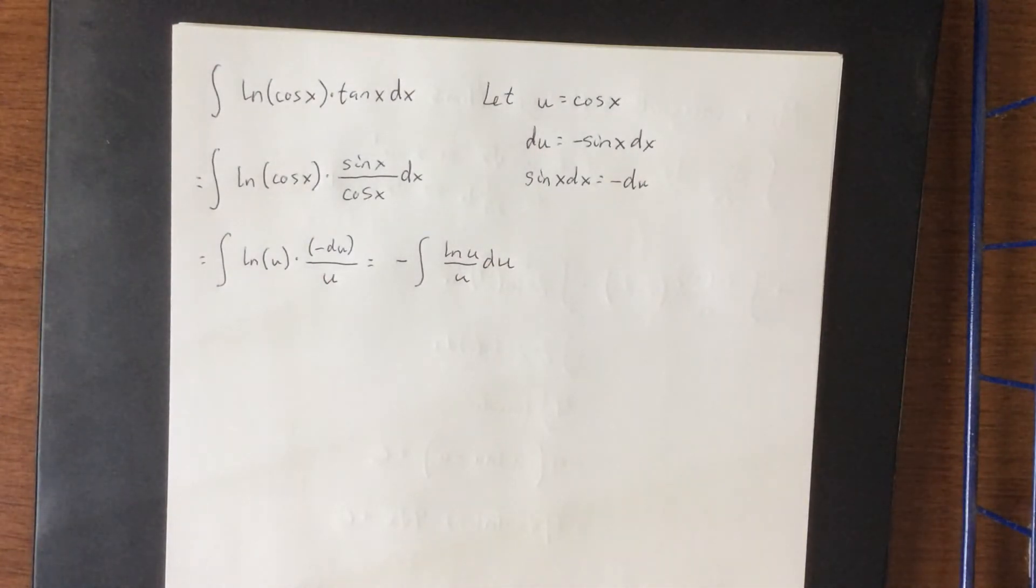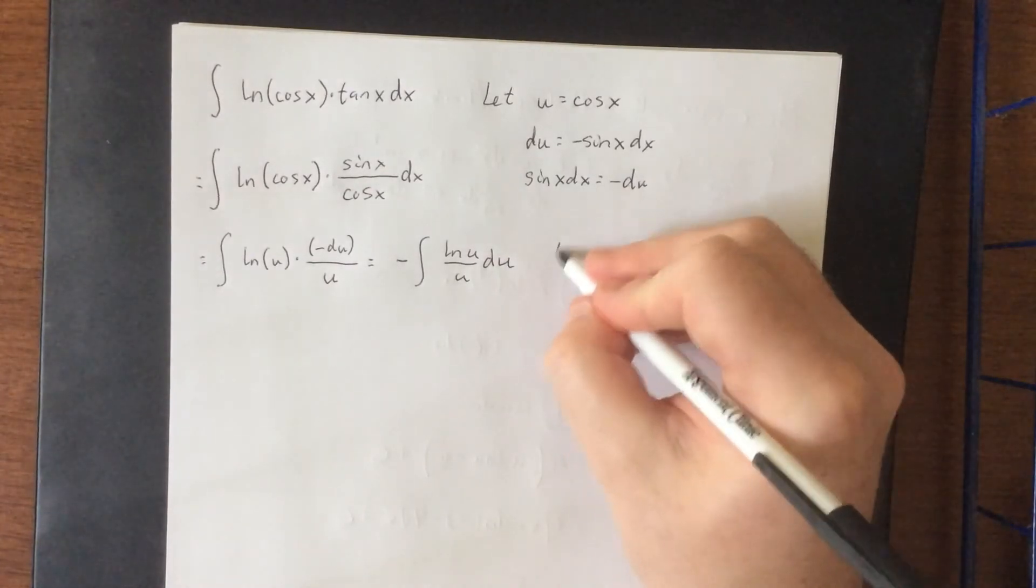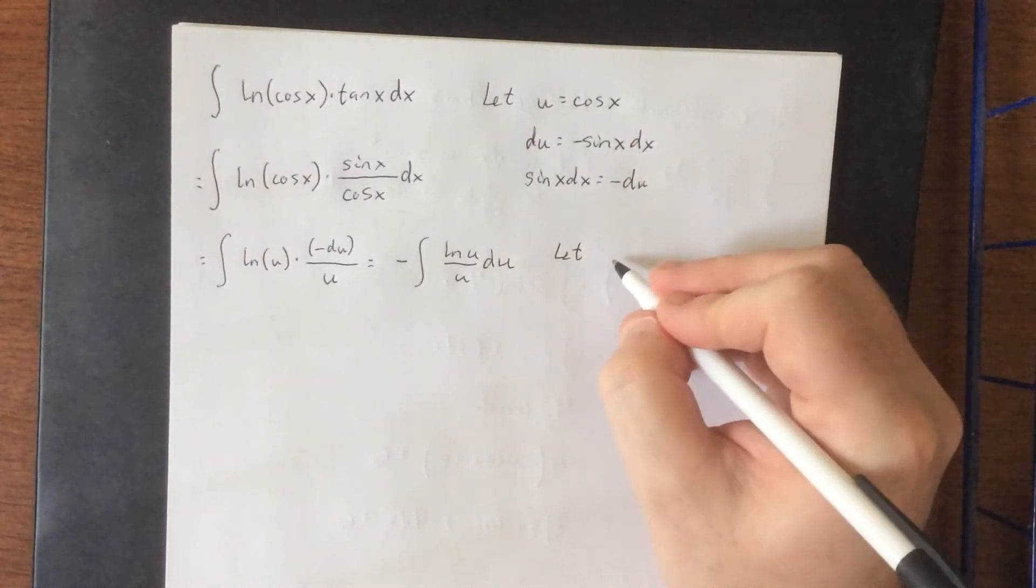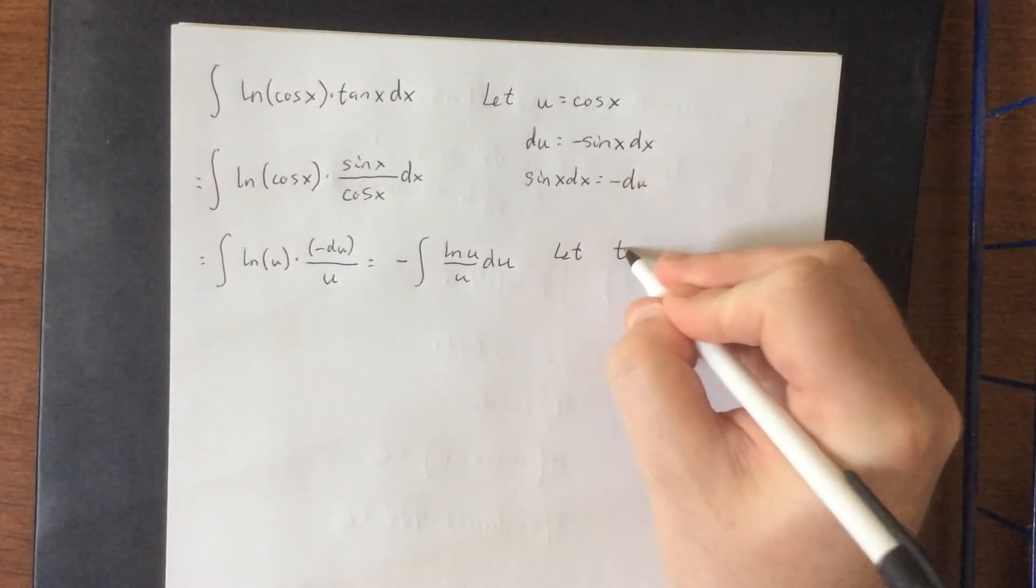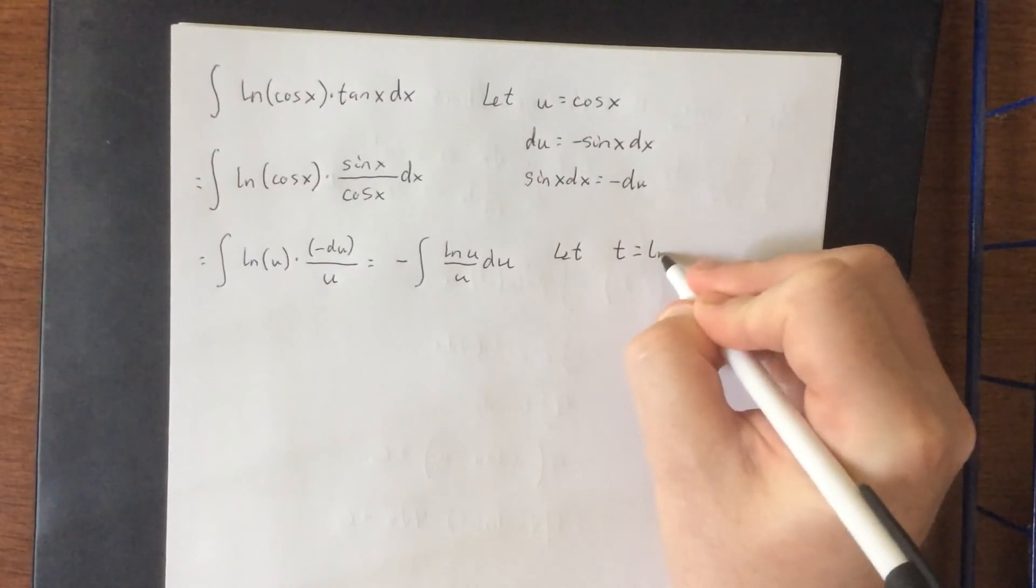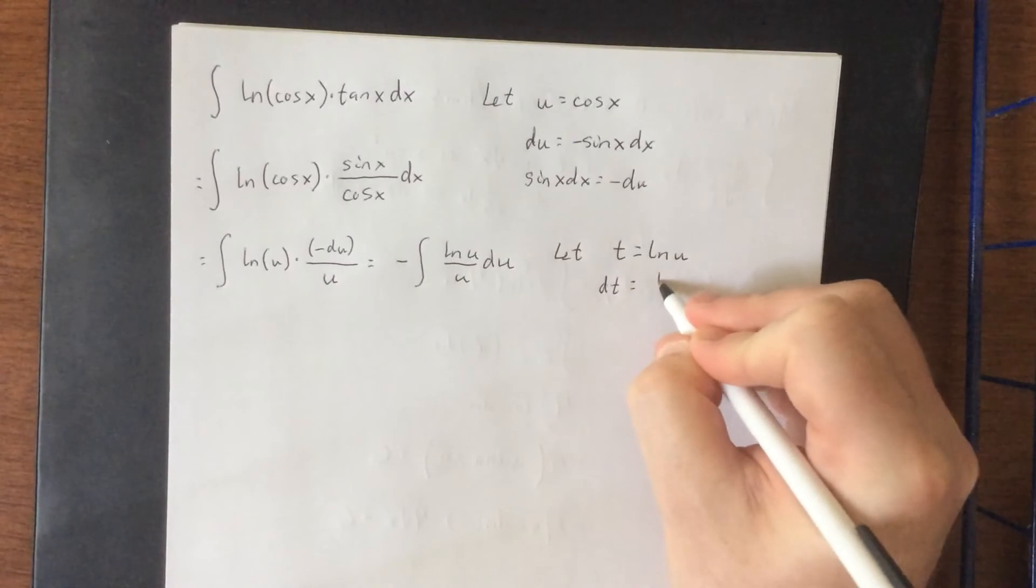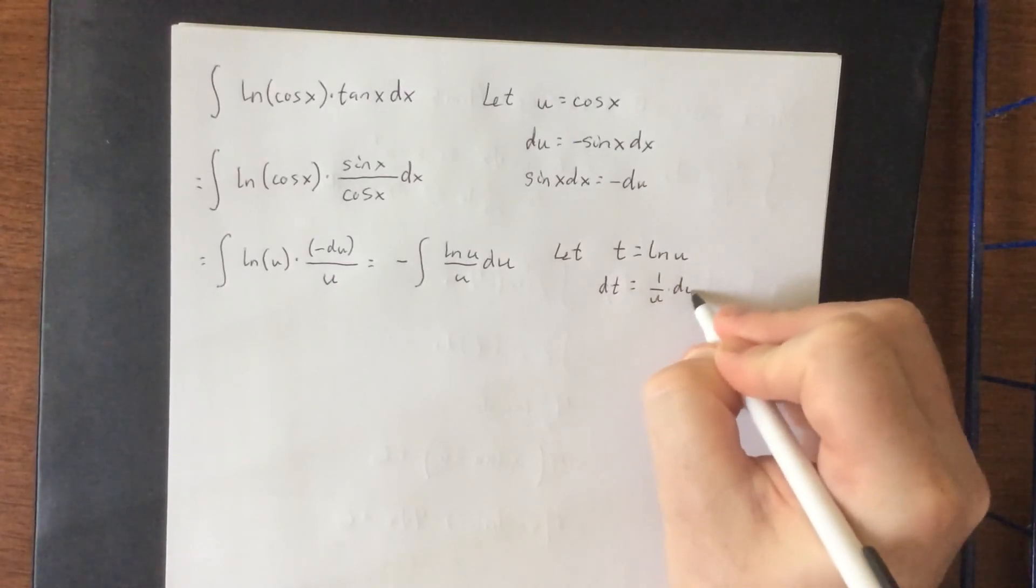Now in its current form it looks similar to what we saw on the previous problem, but this one will actually be integrated using a secondary substitution. Now because we've already used u, you should probably use a different variable for this. I'm going to go with t. I'm going to say let's let t be equal to the natural log of u. That way our differential would be dt, that is 1 over u times du.